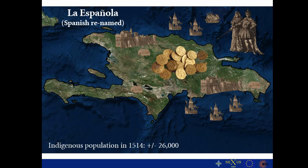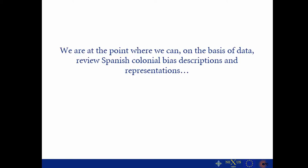When Columbus arrived, even before putting his first foot on land, he renamed the island as La Española. Then in a census done by the Spanish in 1514, the indigenous population was decimated to 26,000 people. Of course, those are all relative numbers, but this means that within the first quarter of a century — 25 years of invasion — more than 95 percent of the population was killed or died from diseases.